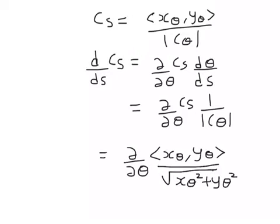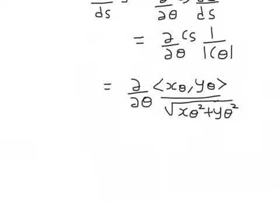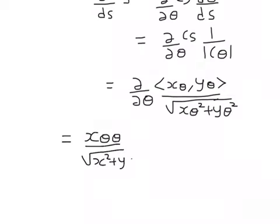There are two components — the i component and the j component. For the i component I'll use the chain rule: first I take the derivative of x_θ and leave the square root term as it is, and then I take the derivative of the square root term, leaving x_θ as it is.